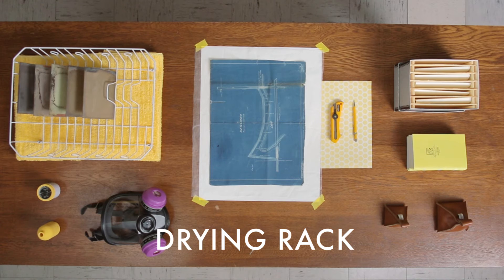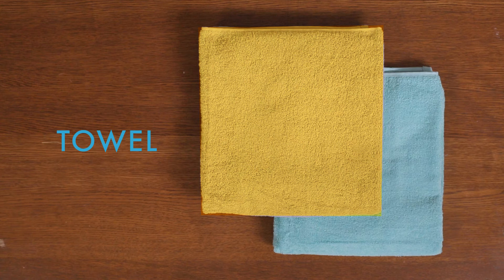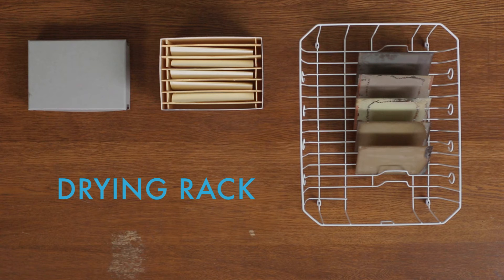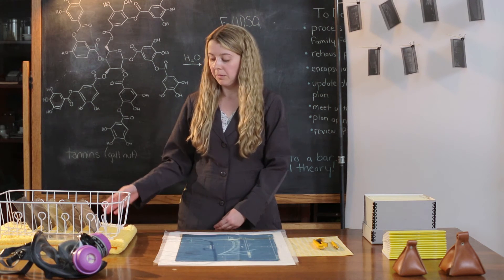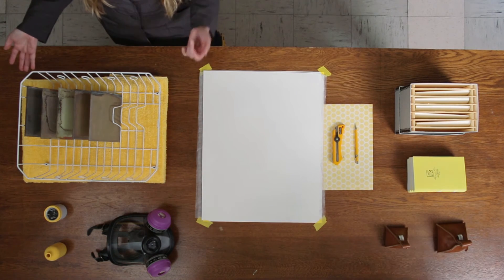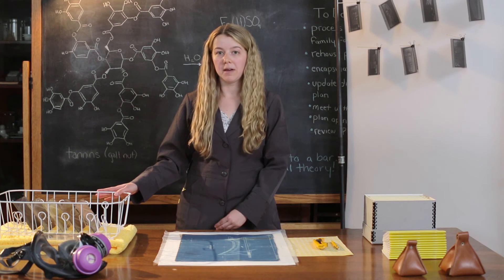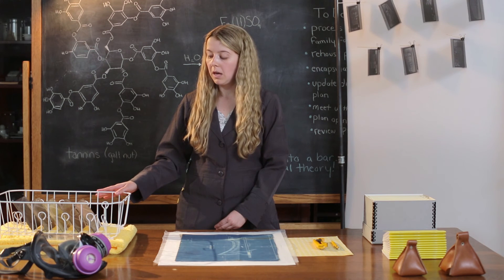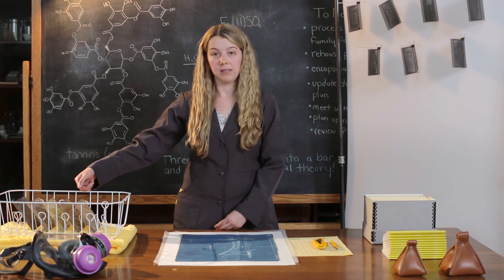For this method, you will need absorbent material, such as a towel or absorbent paper, and an enamel-coated drying rack. Place your absorbent material on the table, and place your drying rack on top of the absorbent material. This is a great method for glass plate negatives. Ensure that the emulsion side is facing out.